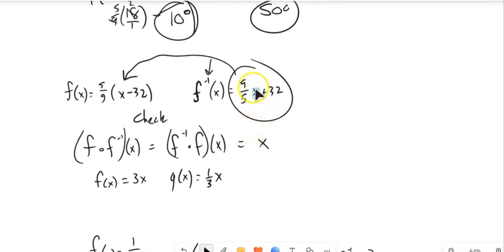Because notice, I'm putting x into here, getting an answer. Putting that into here, I'm getting x back. It's undoing it. So let me do that. So 5 ninths times, this is going to take the place of that input. 9 fifths x plus 32 minus 32. So notice this just got input into that x spot.